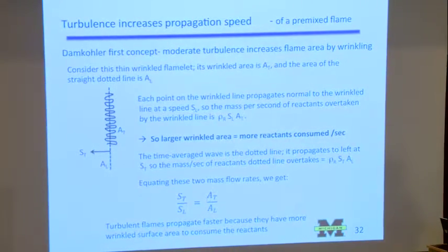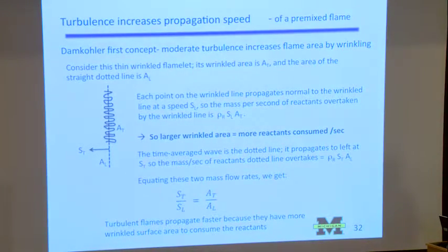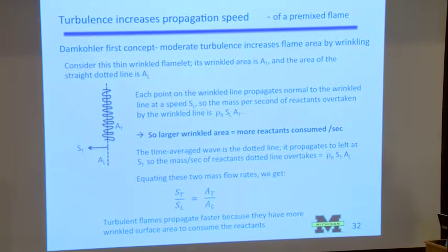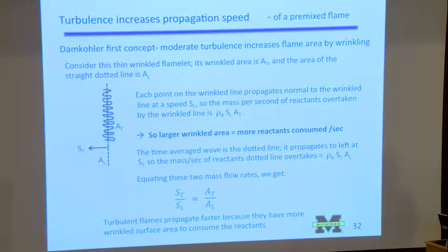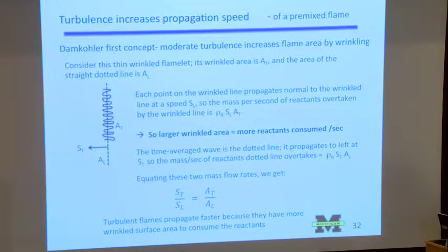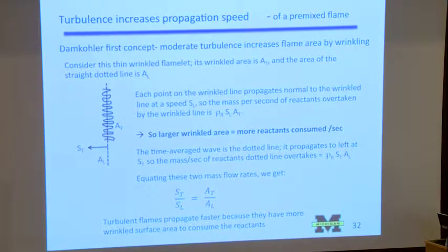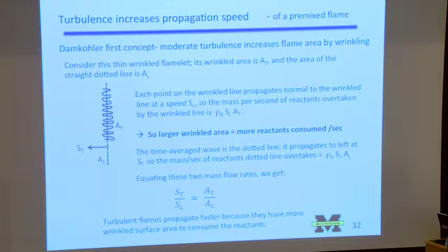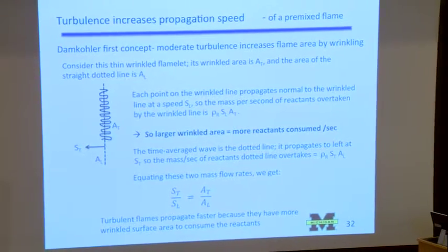What we're trying to do is combine flamelet ideas — laminar flamelet ideas — with the probability that a flamelet is present. When you multiply those two together, either by taking the integral I described or by doing flame surface density, they're pretty much equivalent, and you get the reaction rate of the turbulent flame. The problem is you have to somehow model the PDF — you need the mean and variance with some equations — or you need a model for the flame surface density, which means an equation for flame surface density.